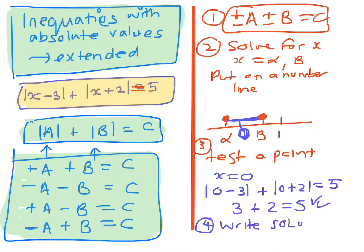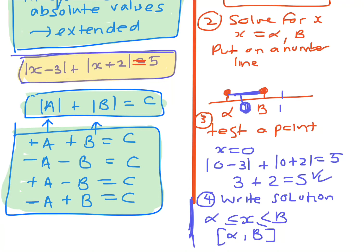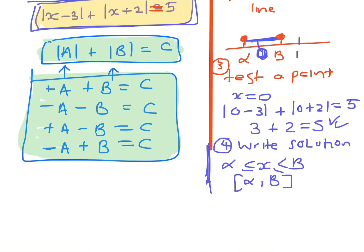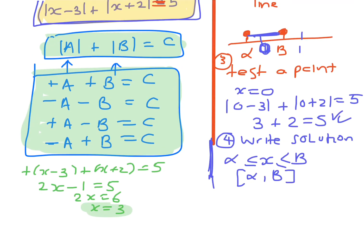The solution could be an inequality. If it doesn't work in between the points when you solve it, you don't write them there; if it works then you write it using interval notation or the inequality. Now focusing on our example: absolute value of x minus three plus absolute value of x plus two equals five. Going through all possibilities — case one, plus plus: x minus three plus x plus two equals five, which gives two x minus one equals five, two x equals six, so x equals three.